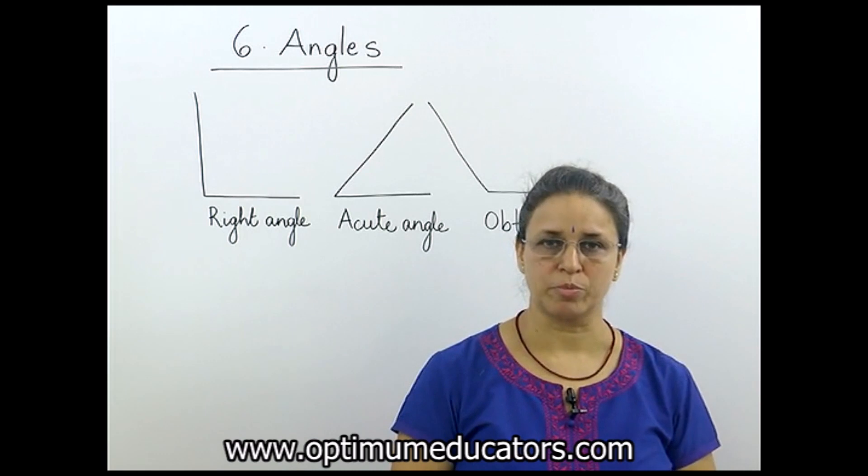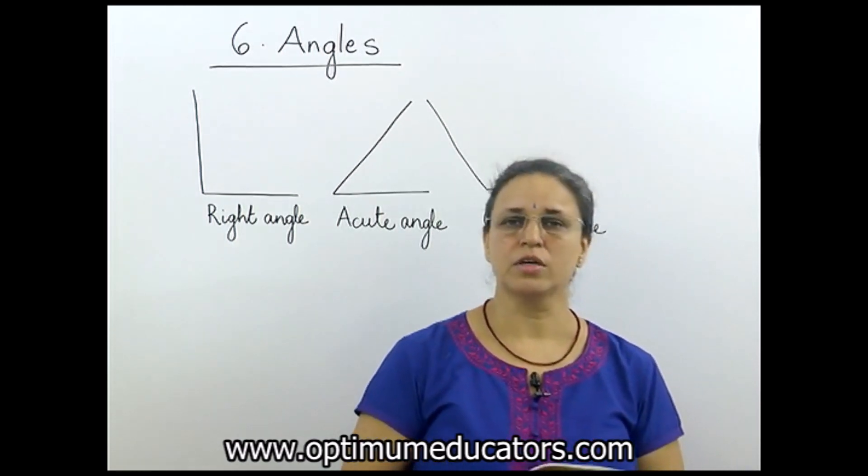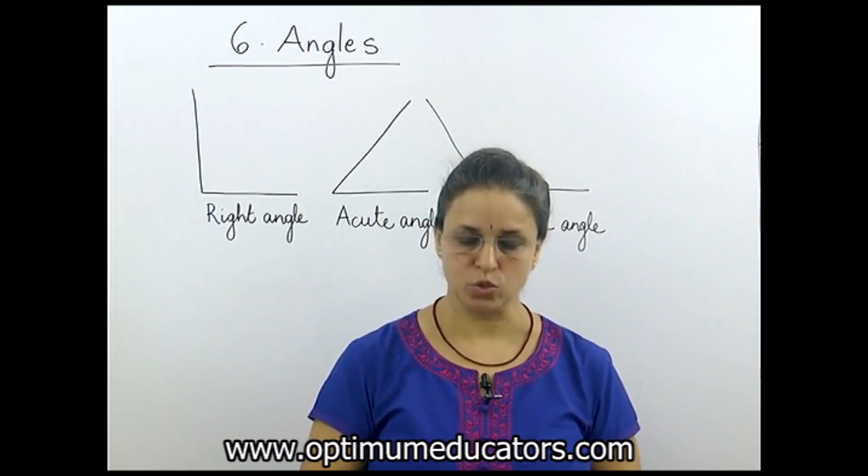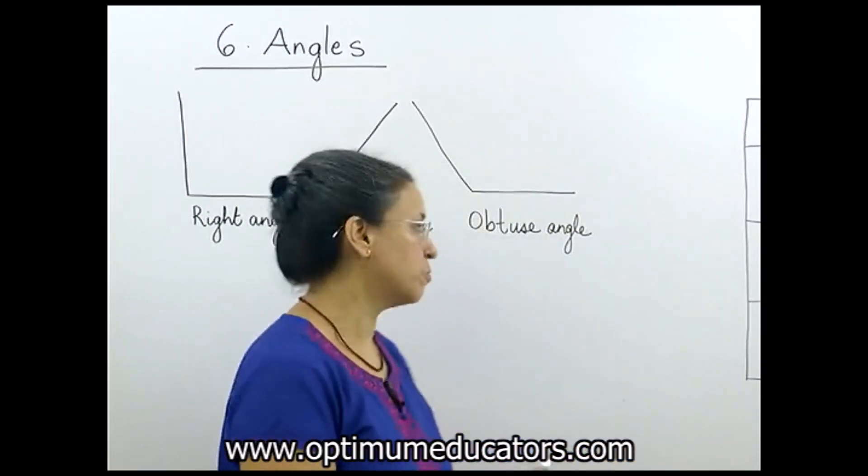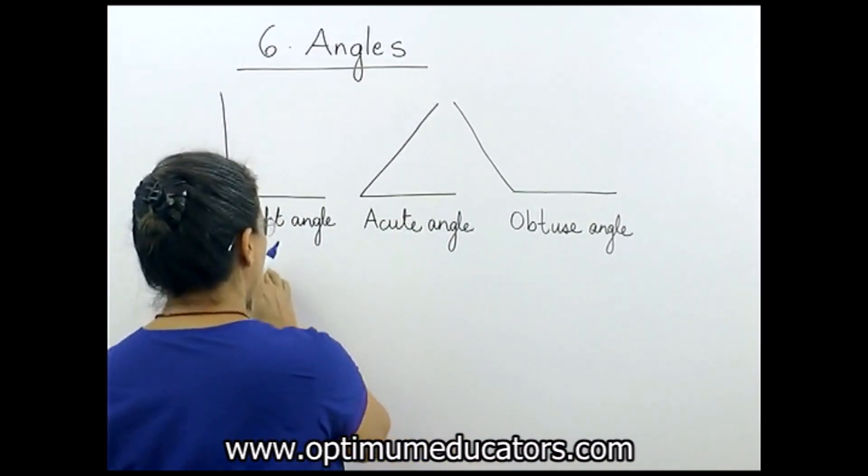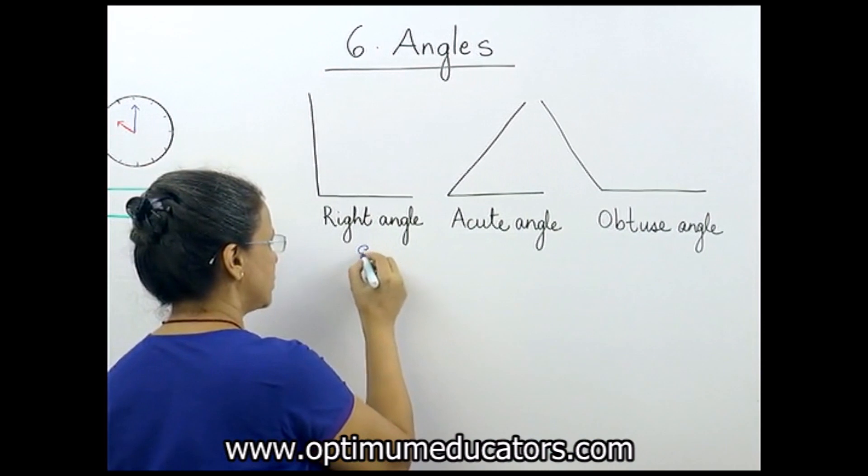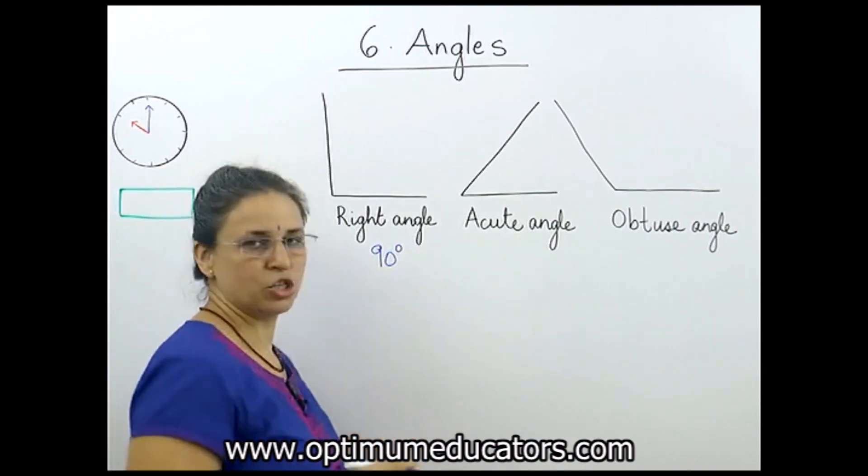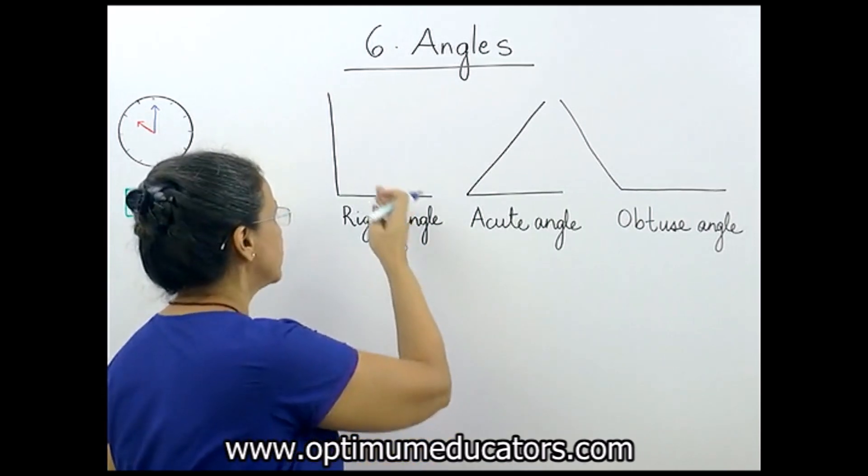We are starting with the sixth chapter: angles. Last year you already learned angles, so let us revise quickly about the different types. The first type that you learned was the right angle. You know that the right angle is always 90 degrees in measurement. We don't need to measure it - by looking at it you can make out that this is a right angle.